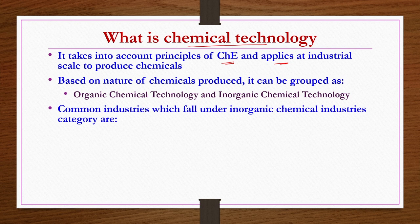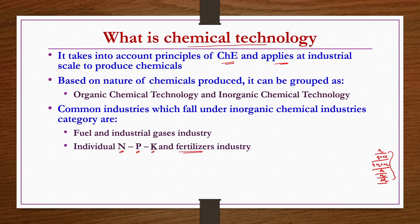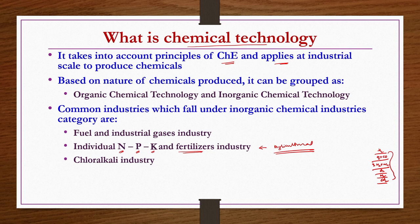Common industries falling under inorganic chemical industries include fuel gases like H2, H2+CO synthesis gas, ammonia synthesis gas, and industrial gases like O2, N2, CO2, etc. Individual fertilizers as well as mixed chemical fertilizers are also in this category — showing that agricultural industry cannot sustain without chemical engineers. Other inorganic industries include chloralkali, cement and lime, and glass industries.